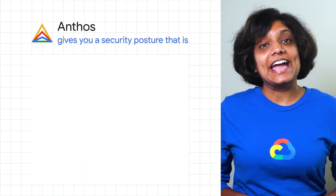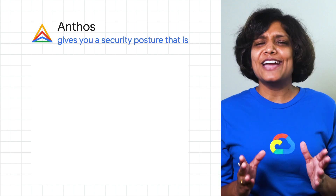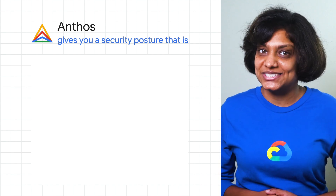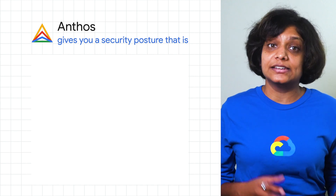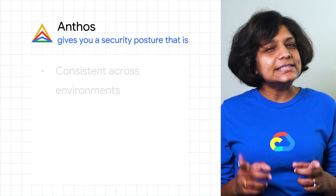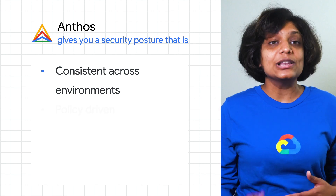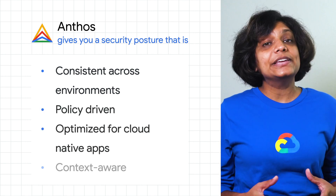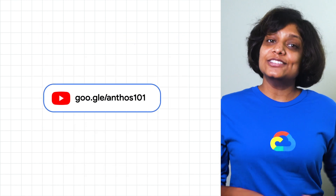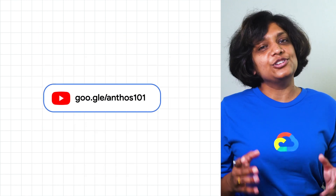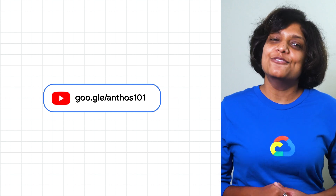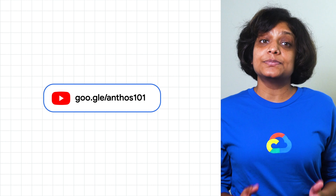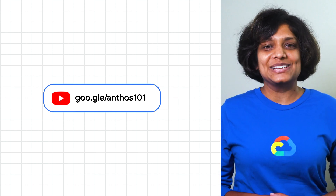So today, we saw that Anthos and Google Cloud give you everything you need to deploy a zero-trust model for your applications. It gives you the ability to deploy and maintain a security posture that is consistent across environments, policy-driven, optimized for cloud-native applications, and application and user context-aware. Try Anthos for yourself and get started on your journey to zero-trust security following the links below. And for more Anthos content, don't forget to subscribe and follow the entire Anthos 101 playlist.